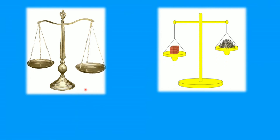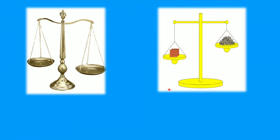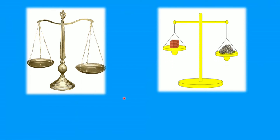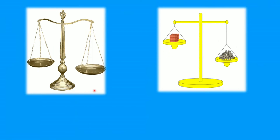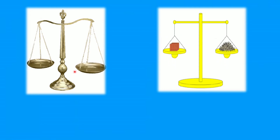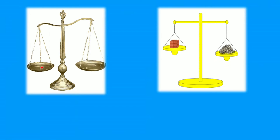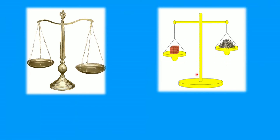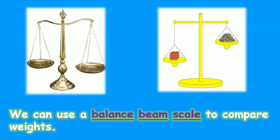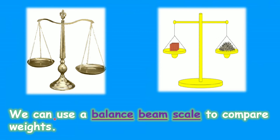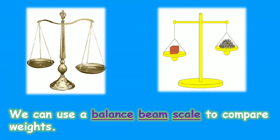We have this measuring tool right here — this is a balance beam scale. As you can see, this is an empty balance beam scale, meaning it has no objects on it. But when we look at this one, it has some objects that it's weighing. We can use a balance beam scale to compare weights — to determine which is heavier or lighter.